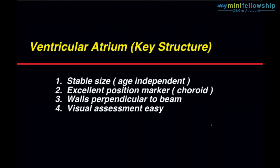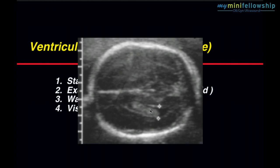Visual assessment is easy. There is a natural relationship between the size of the glomus of the choroid plexus and the size of the ventricular atrium, such that the glomus will fill or nearly fill the ventricular atrium, and if it does, no measurement is required. That is a normal ventricular atrium.